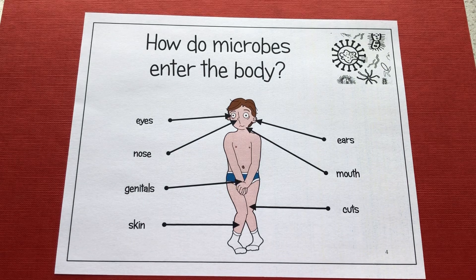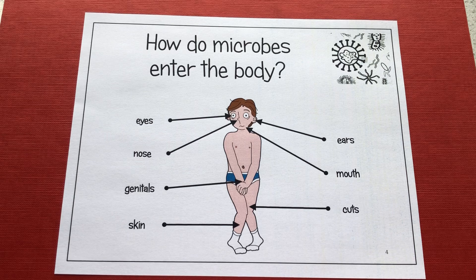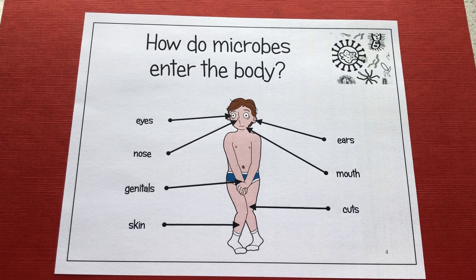This is a Year 8 microbes video. We're looking at how microbes enter the body and how our body tries to prevent that from occurring — how it tries to protect us from those microbes. From the picture here we can see the different ways that microbes enter the body: through the eyes, the nose, the ears, the mouth, through genitals, cuts, and through skin. Let's look at how we can prevent those infections.